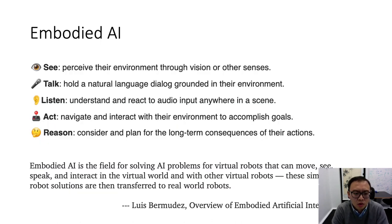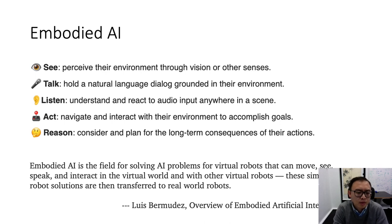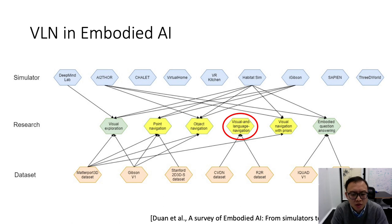An extensive version of V3A is Embodied AI, a field for solving AI problems for virtual robots that can move, see, speak, and interact in the virtual world and with other virtual robots, with simulated solutions then transferred to real-world robots. This requires an agent to have the ability to see, talk, listen, act, and reason. This figure from a survey of Embodied AI summarizes the simulators and research tasks in the field. The VLN task sits in the middle between object navigation and visual navigation with priors.